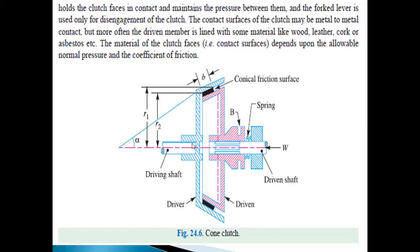The driven member rests on the driven shaft and may be shifted along the shaft by a fork lever provided at point B. In order to engage the clutch, the two conical surfaces are brought into contact. Due to friction resistance at the contact surface, torque is transmitted from one shaft to another. In some cases, a spring is placed around the driven shaft in contact with the hub of the driven member, which holds the clutch surfaces in contact and maintains pressure between them.